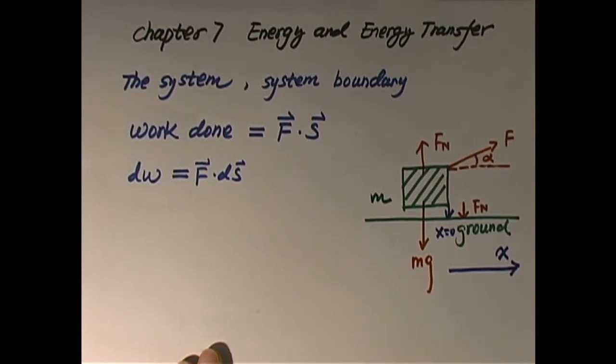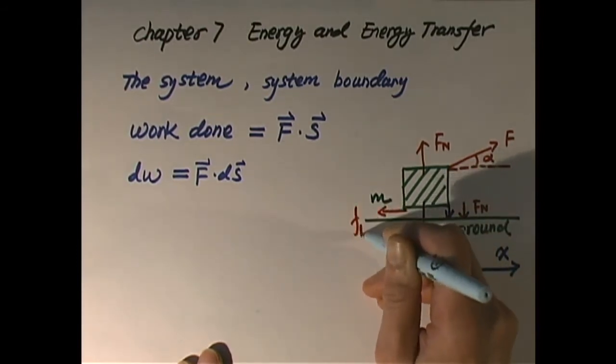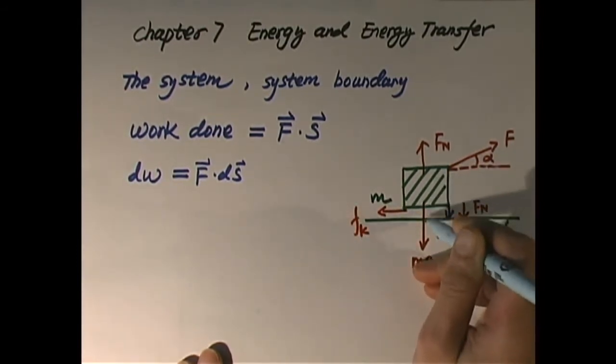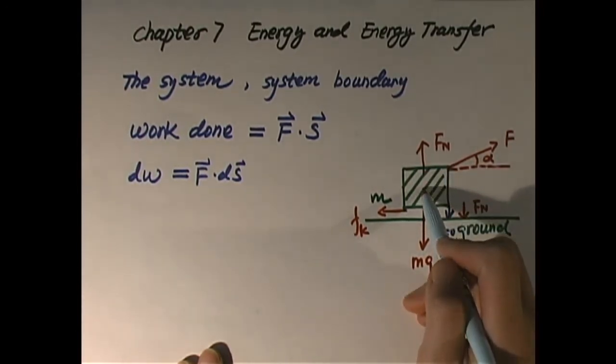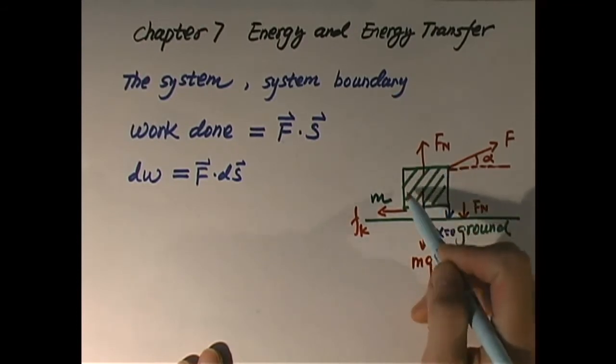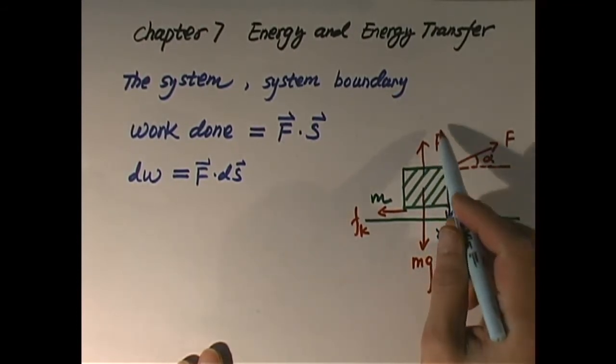Another force might happen because usually there is friction between the block and ground during the motion. That friction is kinetic friction because the two contact surfaces slide against each other.